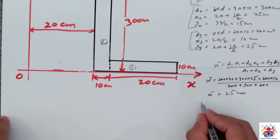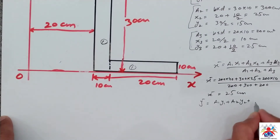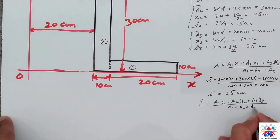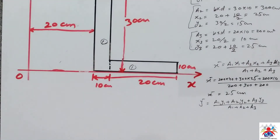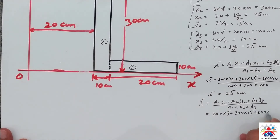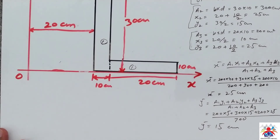Now we calculate y-bar. Y-bar equals (A1·y1 + A2·y2 + A3·y3) divided by (A1 + A2 + A3). Substituting: (200 × 5) + (300 × 15) + (200 × 25), divided by 700. The value of y-bar is 15 centimeters.